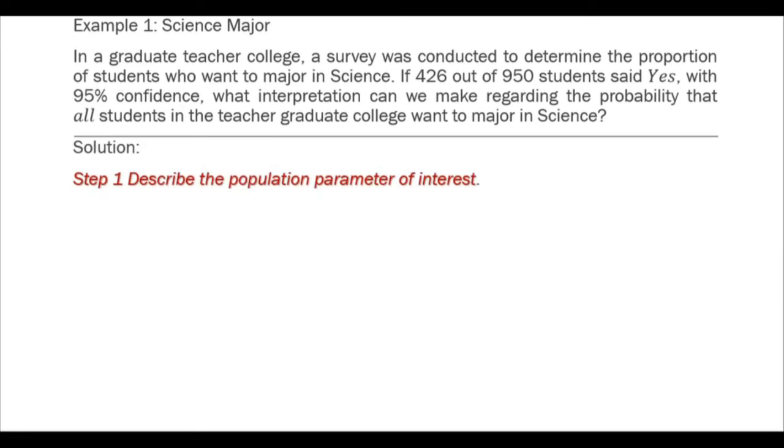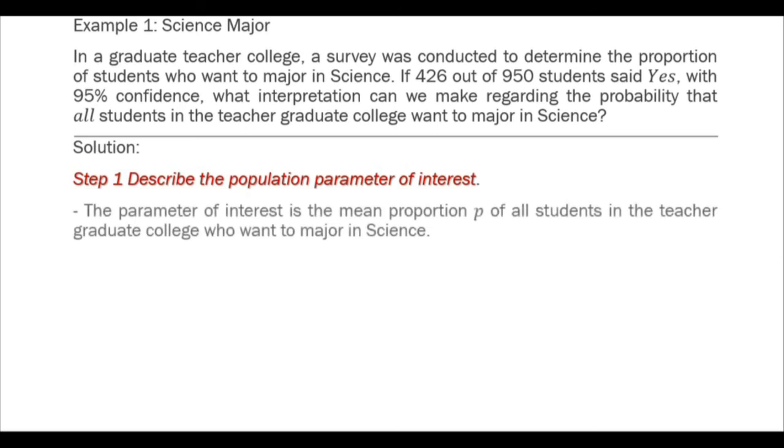Solution: Step 1, Describe the population parameter of interest. The parameter of interest is the mean proportion p of all students in the teacher-graduate college who want to major in science.